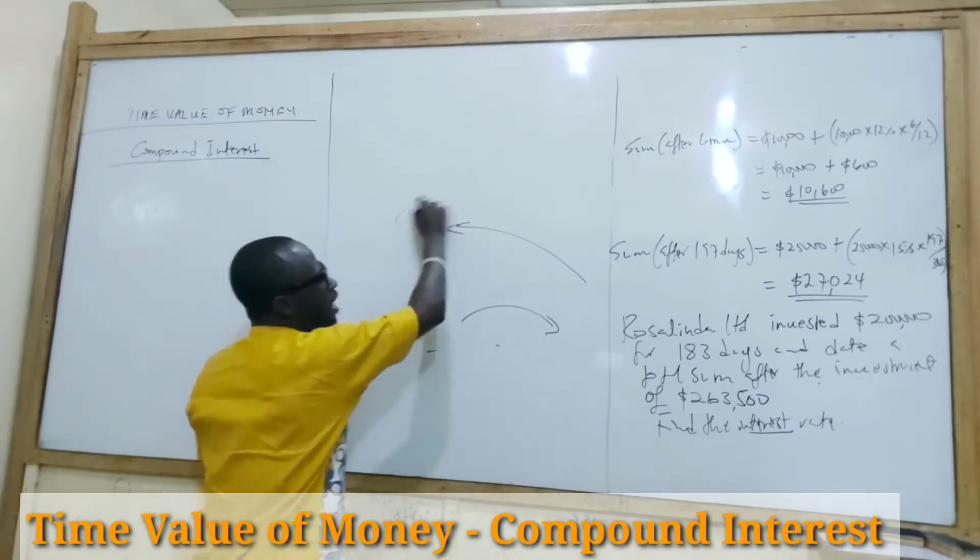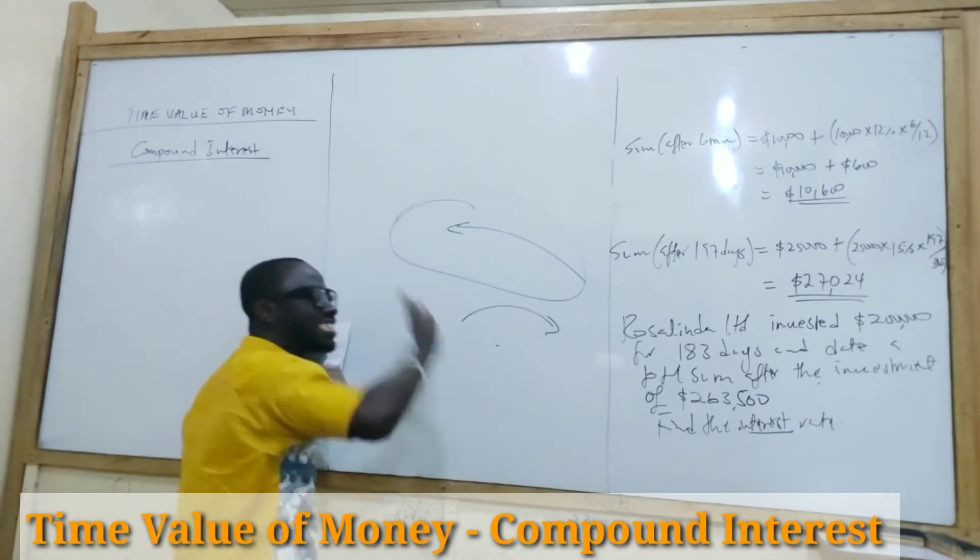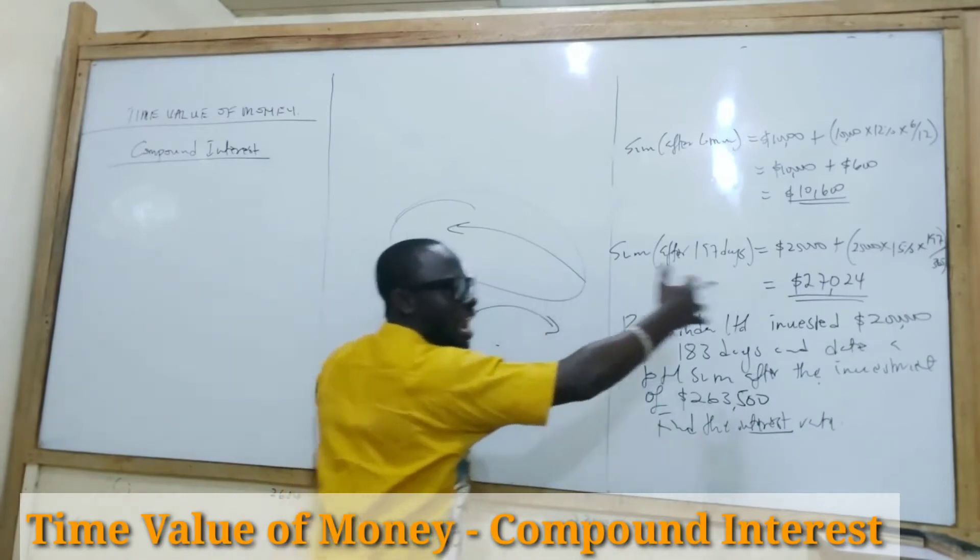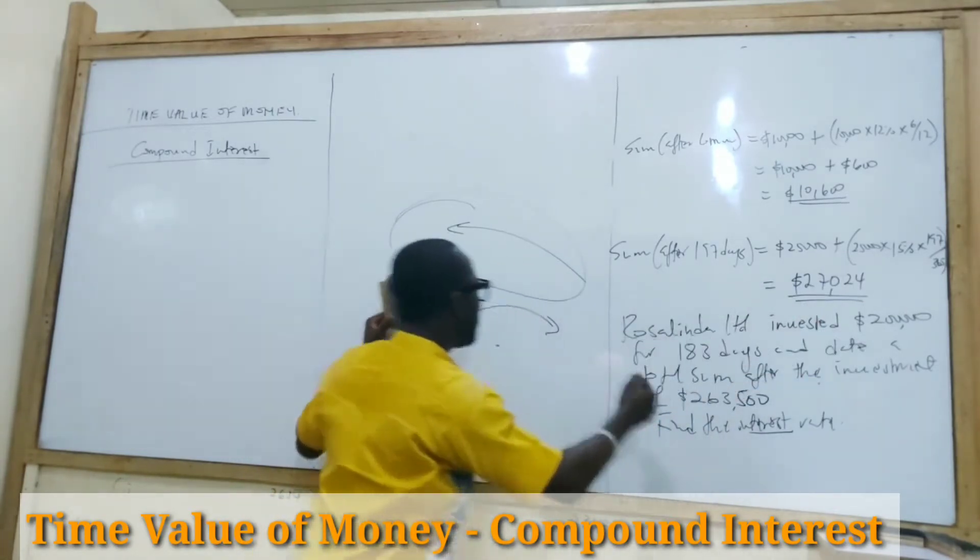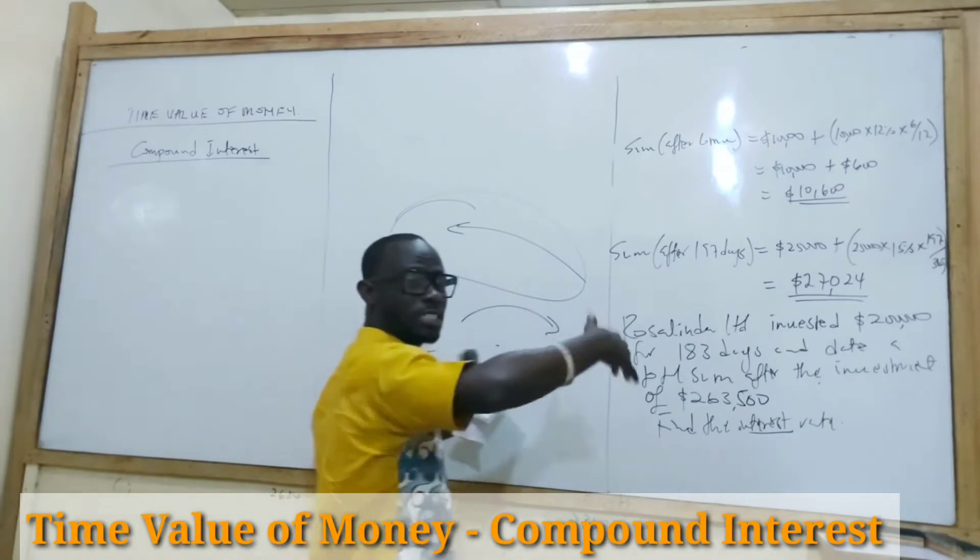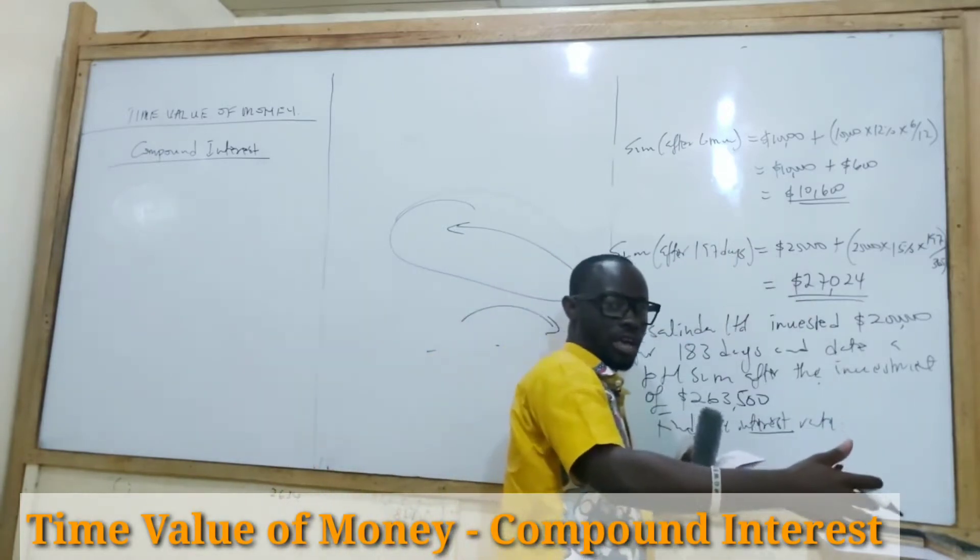Meaning, in simple interest, the same interest is paid over the life of the investment, over the life of the loan. But under compound interest, the investment what? Changes with time.